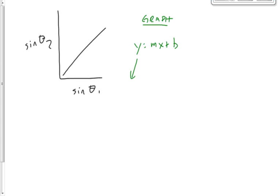What appears on the y-axis of this graph? Sine theta 2, right? So let's replace y with sine theta 2. M is the slope. Let's replace m with the word slope because we don't want to get m mixed up with mass. What's on the x-axis here? Sine theta 1. So let's put sine theta 1 right there.